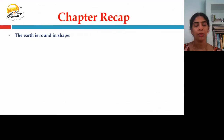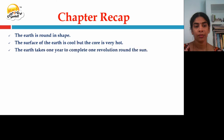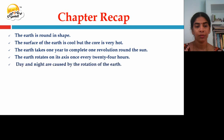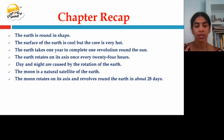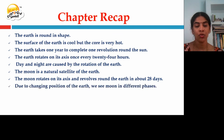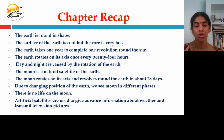Chapter recap: The earth is round in shape. The surface of the earth is cool, but the core is very hot. The earth takes one year to complete one revolution around the sun, and rotates on its axis once every 24 hours. Day and night are caused by the rotation of the earth. The moon is the only natural satellite of the earth, rotating and revolving around the earth in about 28 days. Due to the changing position of the moon, we see it in different phases. There is no life on the moon. Artificial satellites are used to give advance information about the weather and transmit television pictures.